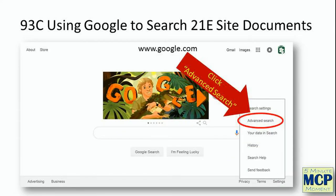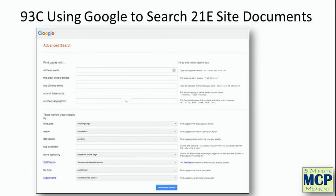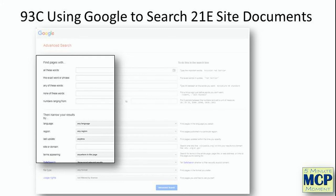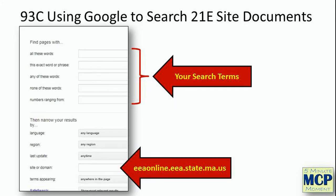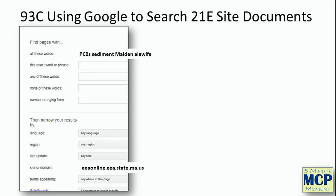Now we'll go back to google.com and bring up the search page. In the lower right-hand corner there's a button called Settings — click on it. That brings up a short list that includes Advanced Search. The advanced search page is split into two big sections: the top section is the search criteria with different ways of entering it, and the bottom section has ways of narrowing where and what you're going to search. The big arrow at the bottom points to where you put in the DEP server — EEAonline.eea.state.ma.us — that holds the 21e documents.